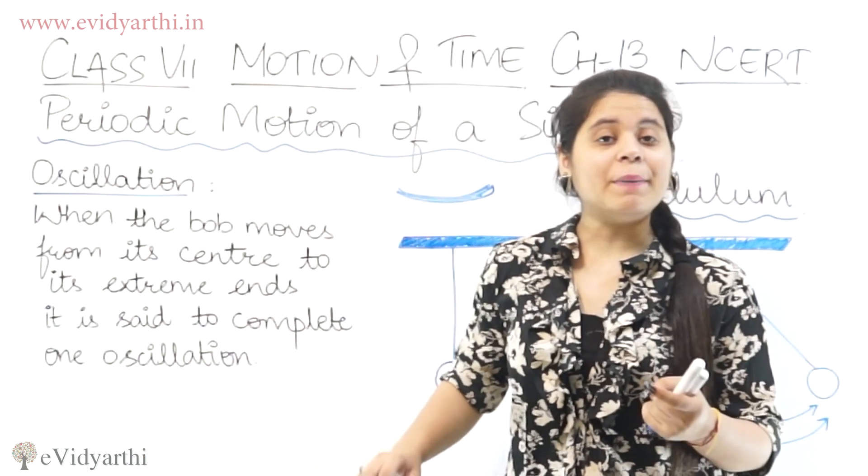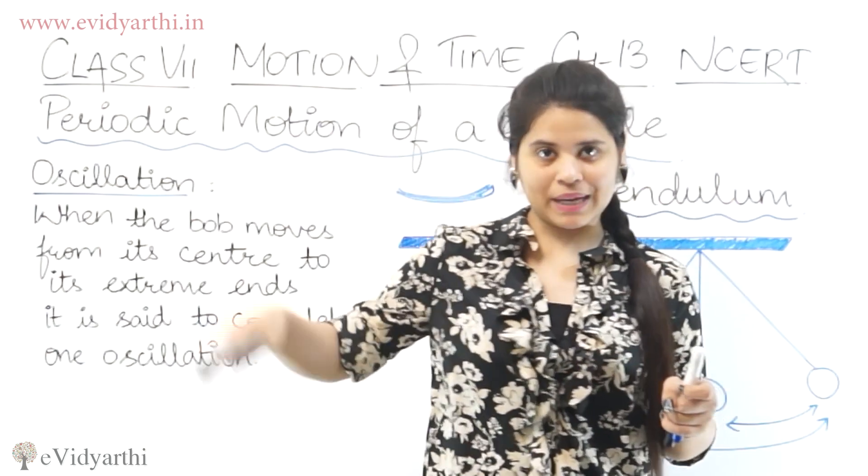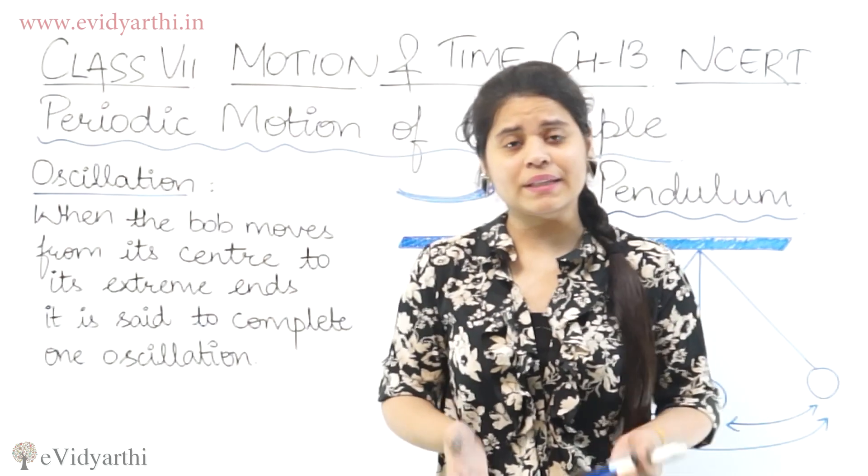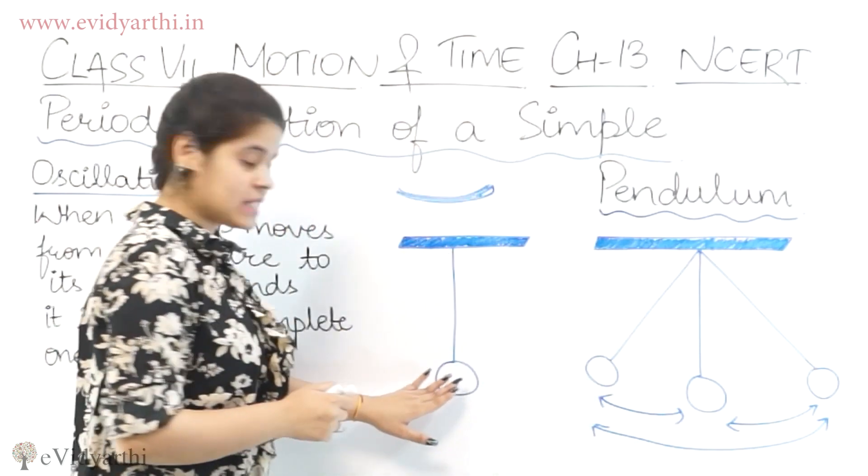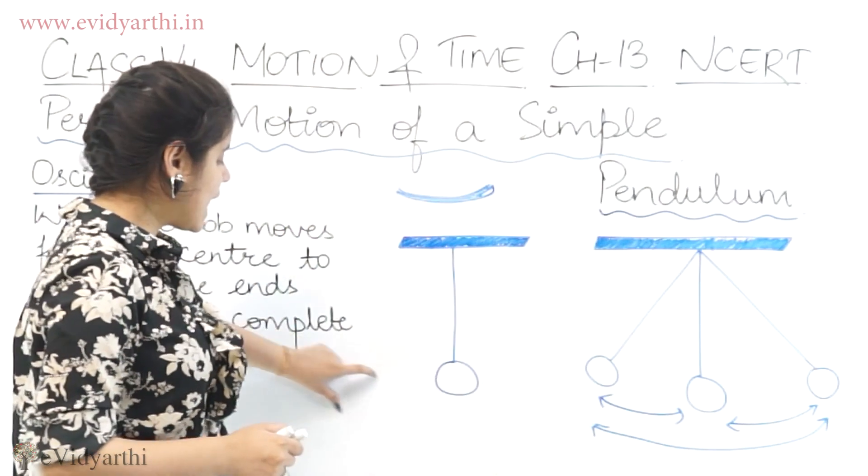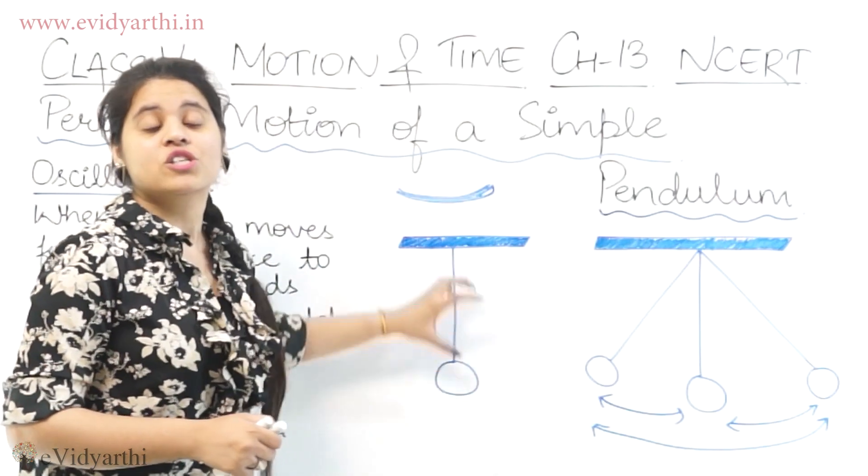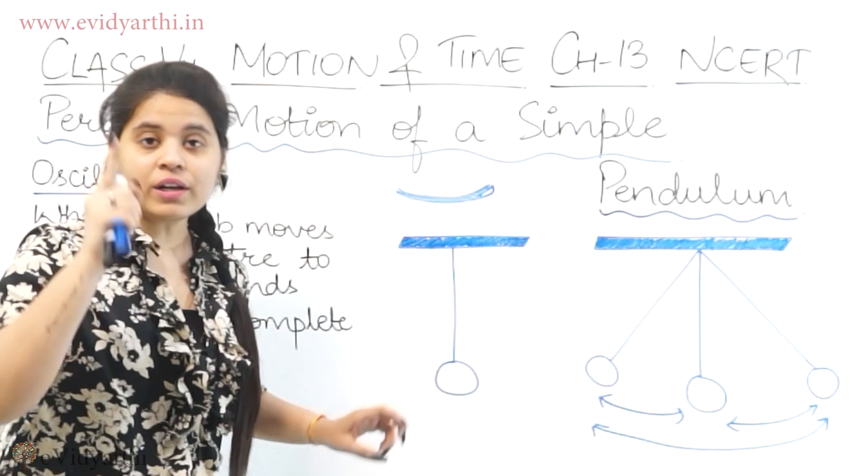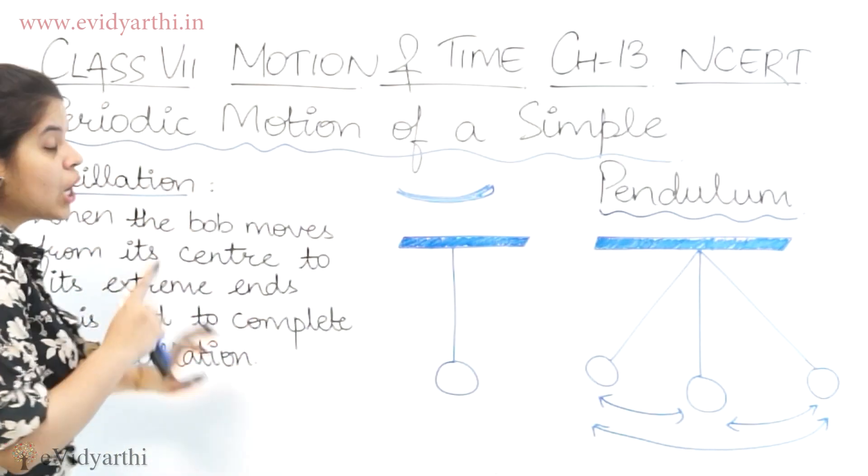So we talked about how the bob moves from center to extreme ends, right? Now this movement everyone knows. So what do we call it? Let's suppose it has completed one oscillation.